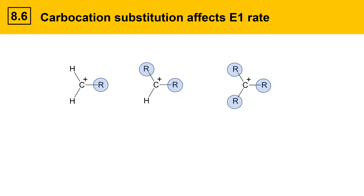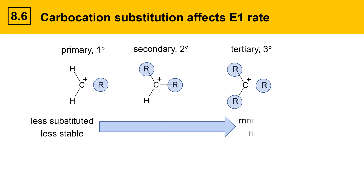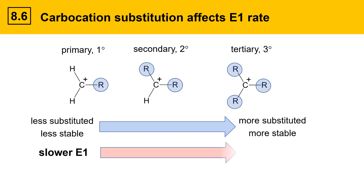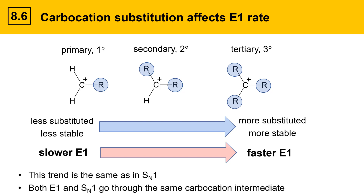Here's a listing of carbocations that could be involved in an E1 mechanism, with three different levels of substitution. Primary carbocations have one R group, secondary carbocations have two, and tertiary carbocations have three R groups attached to the carbocation carbon. Each R group stabilizes the carbocation a little bit and helps make it more stable. The stability trend goes from less stable primary to more stable tertiary, giving slower E1s with primary and faster E1s with tertiary substrates. This is the same trend as in the SN1 mechanism because both E1 and SN1 go through the same carbocation intermediate.